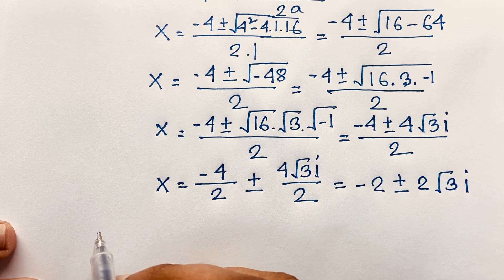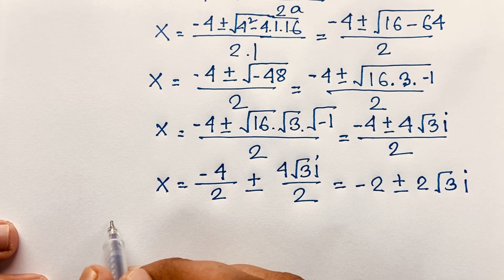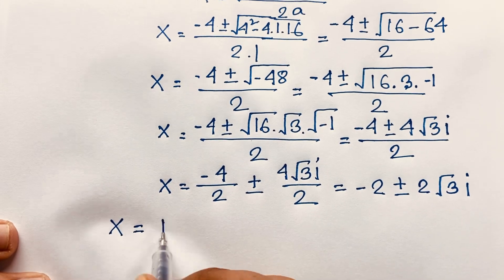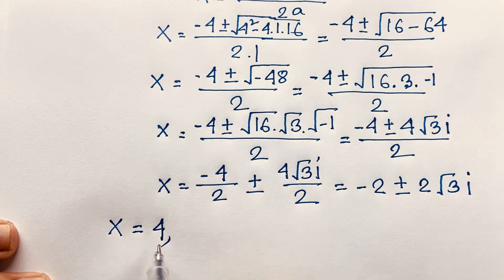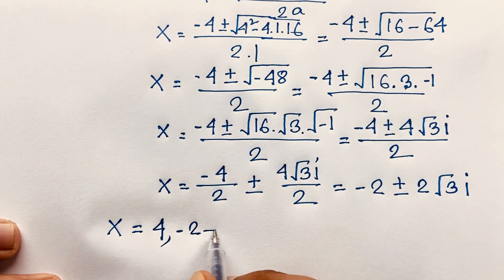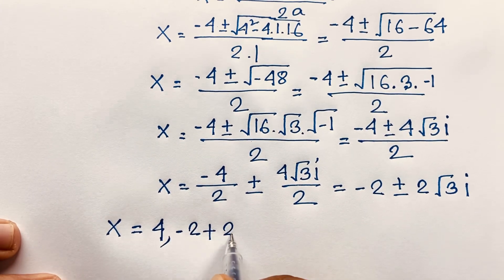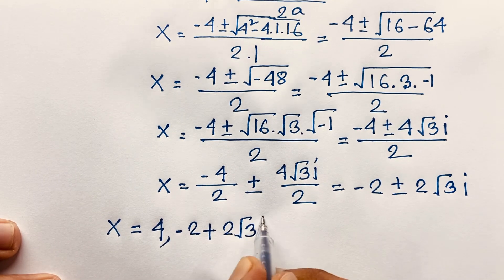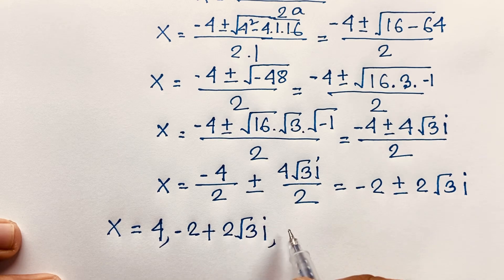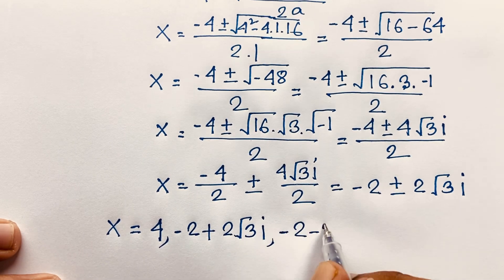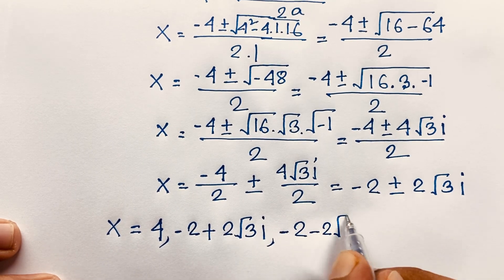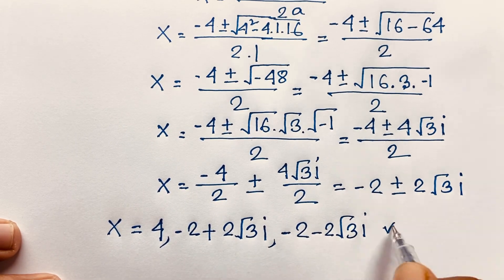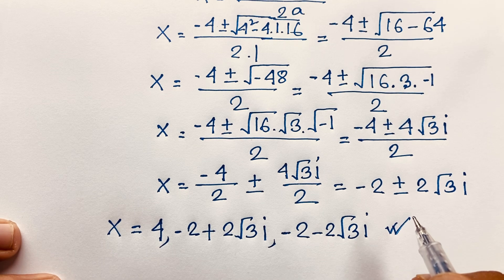So we find our final solutions for this math olympiad question: x equals positive 4, x equals minus 2 plus 2 square root 3 i, and x equals minus 2 minus 2 square root 3 i. These are our three solutions.